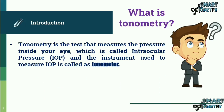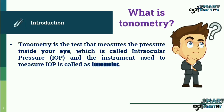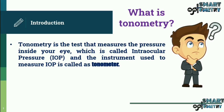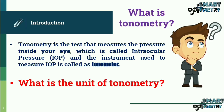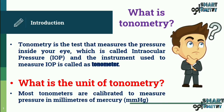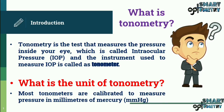Tonometry is a test that measures the pressure inside your eye, which is called intraocular pressure, or IOP. The instrument used to measure IOP is called a tonometer. What is the unit of tonometry? Most tonometers are calibrated to measure